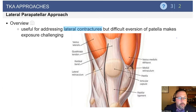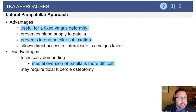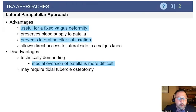The lateral parapatellar approach is used much less frequently, more commonly for the unicompartmental knee replacement, and can be used for the valgus knee. Disadvantages include difficulty mobilizing the patella, risk of patellar tendon avulsion, and may require a more extensile tibial tubercle osteotomy.